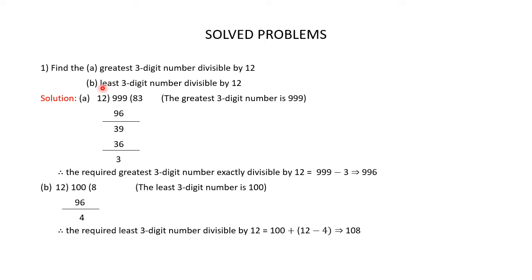Next, you are asked to find the least 3-digit number divisible by 12. The least 3-digit number is 100, but when you divide 100 by 12, you get 4 as the remainder. So 100 is not exactly divisible by 12.